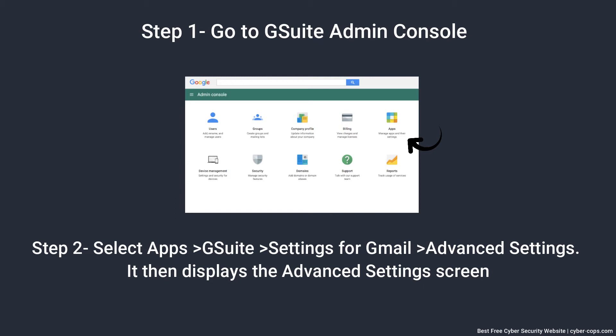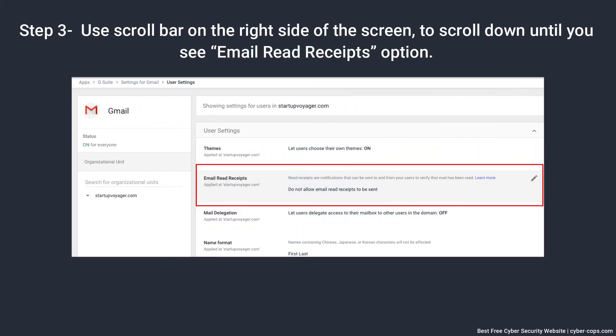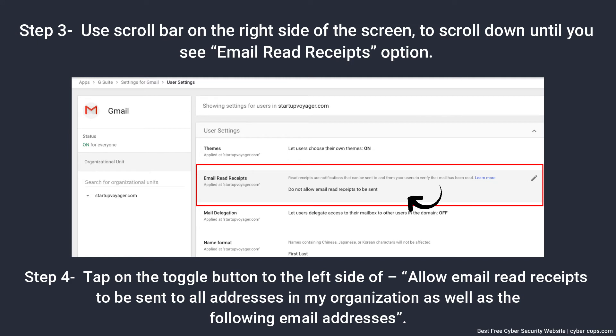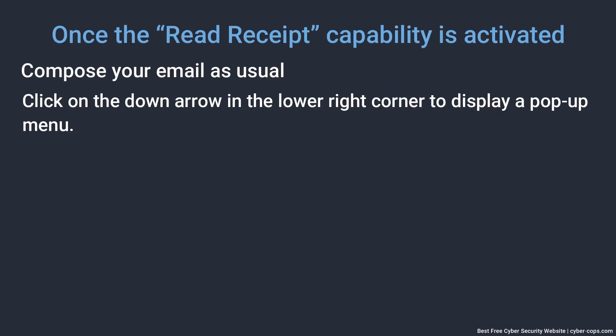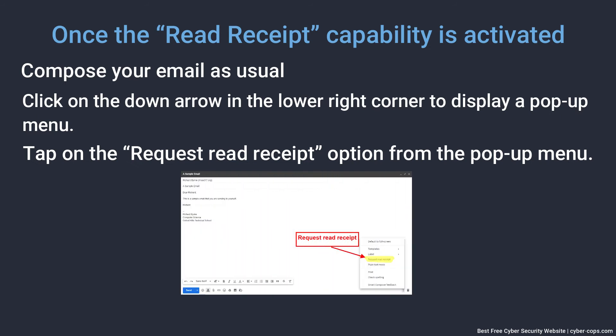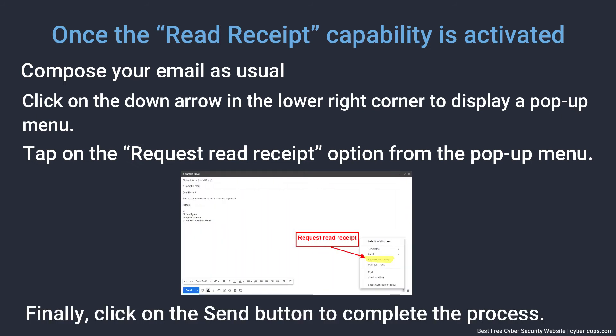Steps to use the read receipt feature in GSuite: Step 1, go to the GSuite Admin Console. Step 2, select Advanced Settings from GSuite under the Apps tab. Step 3, use the scroll bar on the right side of the screen to scroll down until you see the Email Read Receipts option. Step 4, tap the toggle button to the left of 'Allow email read receipts.' Once activated, compose your email as usual, click the down arrow in the lower right corner to display a pop-up menu, tap 'Request Read Receipt,' and finally click Send.